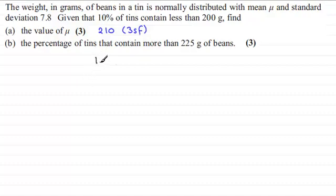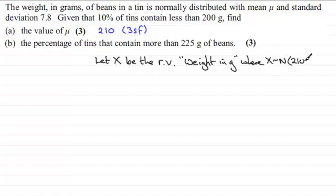Well, the first thing I'd want to do is update the random variable that I had in the first part. That was x. We said let x be the random variable, just put RV for short. And that was the weight that we had for the beans in grams. So weight in grams. And we now know that x is distributed normally with a mean of 210 and the variance was 7.8 squared, in other words, the standard deviation squared.